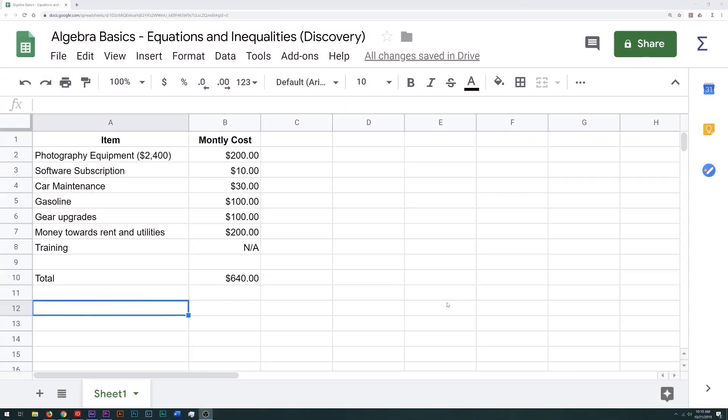Let's start with the overhead, the cost of doing business. Here's a breakdown of my monthly costs. The photography equipment that I need cost about $2,400. That's the lenses and tripods and all that stuff. I'd like to pay that off in about a year, which gives me about $200 per month.